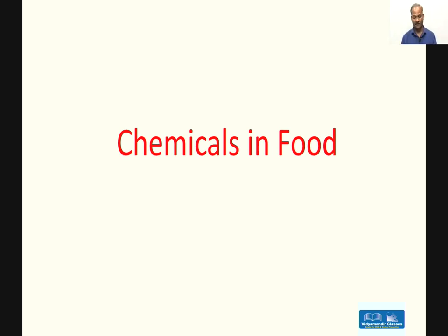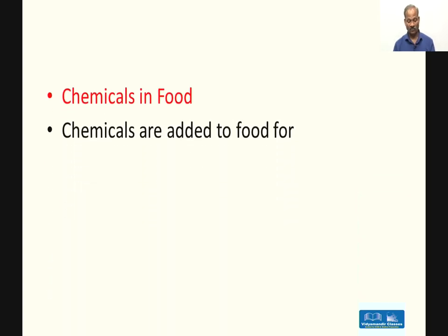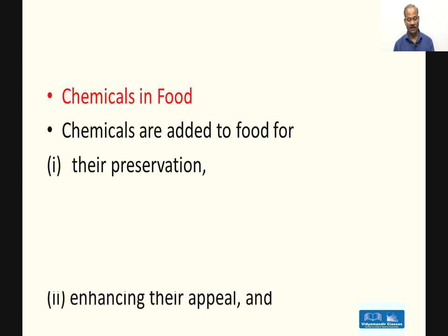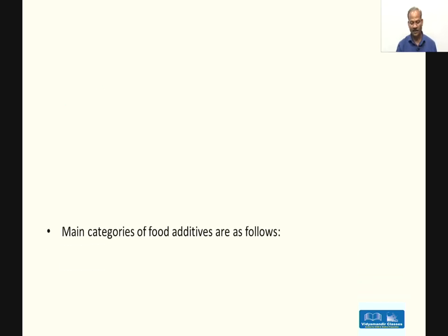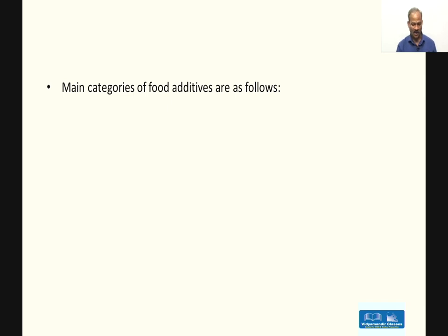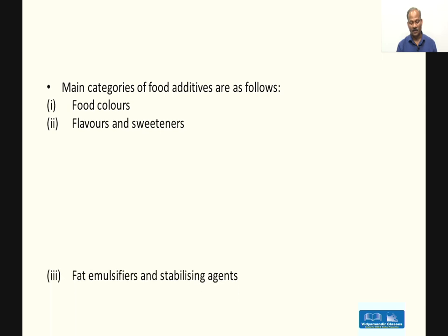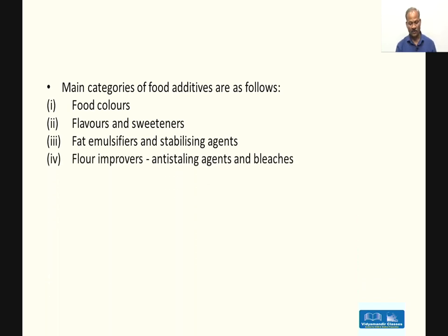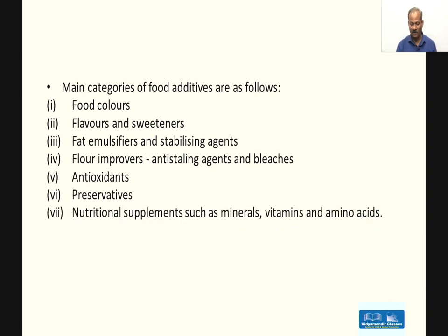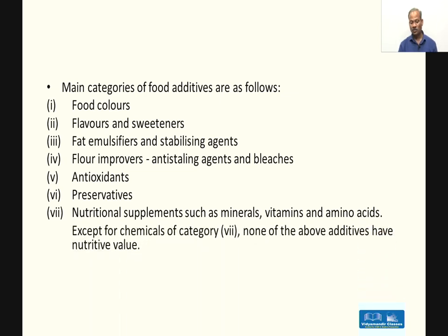Chemicals in food are added mainly for their preservation — to store food, so some preservatives are needed — and to enhance their appeal. Also, to add nutritive value, some chemicals need to be added. The main categories of food additives are: food colors, flavors and sweeteners, fat emulsifiers and stabilizing agents, flour improvers including anti-staling agents and bleaches, antioxidants, preservatives, and nutritional supplements such as minerals, vitamins, and amino acids.